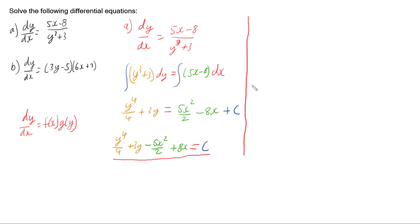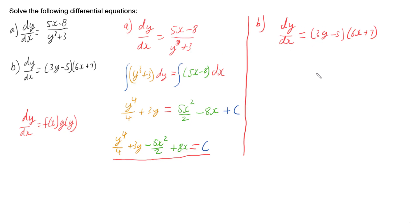Now let's look at part b: dy/dx equals (3y minus 5) times (6x plus 7). Dividing both sides by (3y minus 5) brings it over, giving dy over (3y minus 5), and multiplying both sides by dx gives us (6x plus 7) dx. Now I can integrate both sides.